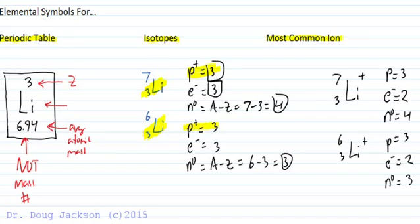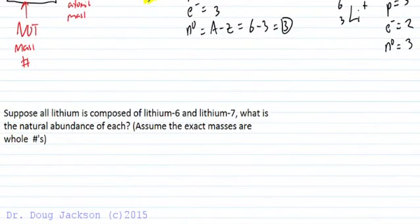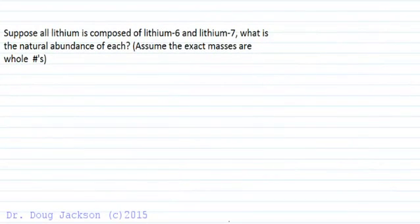We can do this for any element. Now suppose we're dealing with isotopic abundances and we say lithium, this is an approximation, is composed of entirely lithium-6 and lithium-7. So we're representing our two symbols that we did above. What is the natural abundance of each? So what percentage of each would make up all of lithium if we're assuming that the exact masses of the elements are the same as the mass number and their whole numbers?